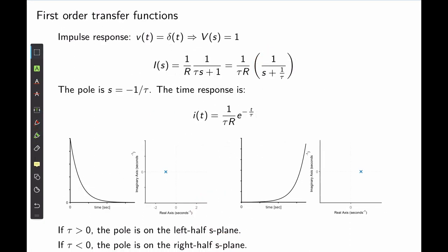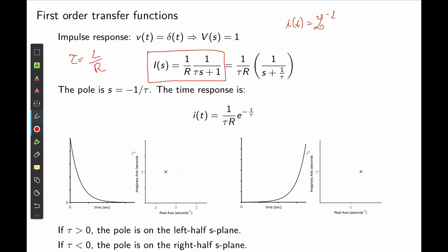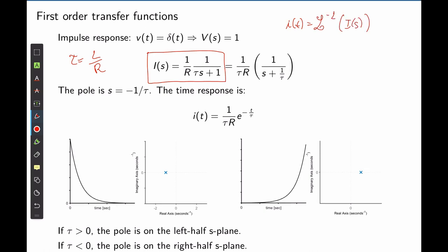For a step input, V(s) equals 1. Replacing that in the transfer function and solving for I(s) gives an expression where τ = L/R. The temporal response is the inverse Laplace transform of I(s). This transfer function has a pole at −1/τ. Because τ is a real number, the pole is also a real number. Taking the inverse Laplace gives a result where, because the pole is real, the time response only has exponential components.